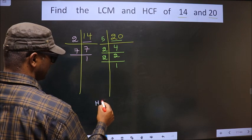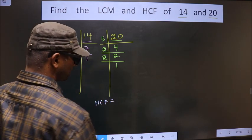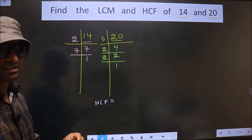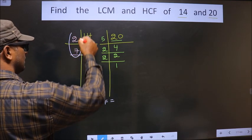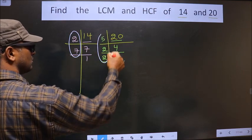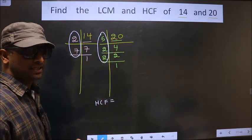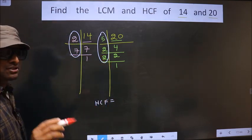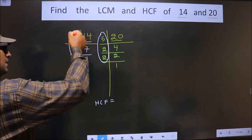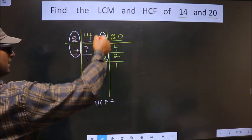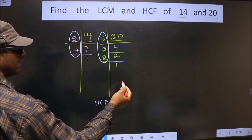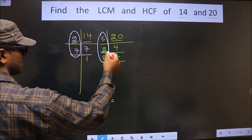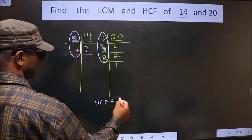So now our HCF is the product of numbers that are present here and also here. We should find the numbers that are present in both places. Starting with the number 2, do we have 2 here? Yes. So you cut 2 right here.